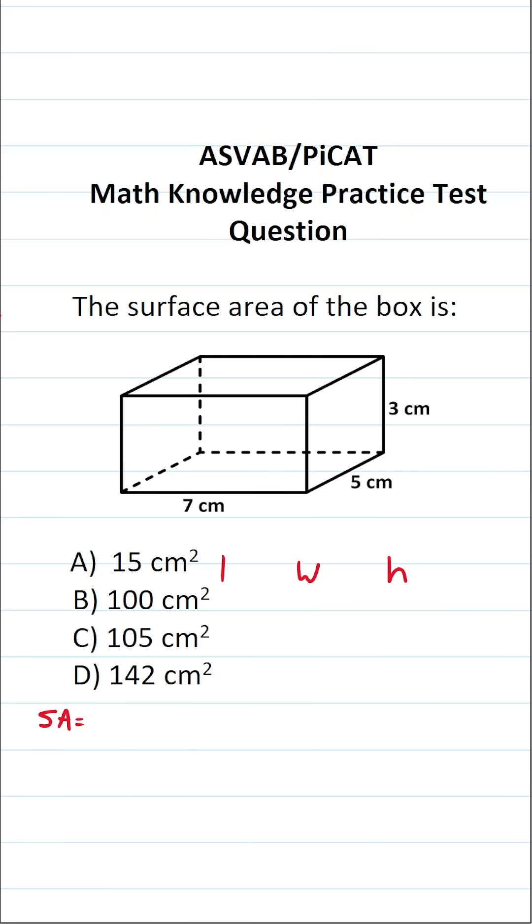So the surface area formula is going to be two times something in parentheses plus two times something in parentheses plus two times something in parentheses. Well what do we put in the parentheses? We put the area of those faces and to quickly do that all you have to do is make sure to multiply your length width and height together. So let's do length times width in this one, length times height in this one, and width times height in this one. And just like that we have the formula to calculate the surface area of a box or a rectangular prism.